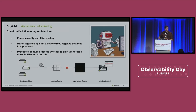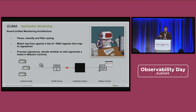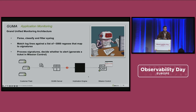On the other side, we have GUMA — the Grand Unified Monitoring Architecture. Its job is basically to parse, classify, and filter syslog. To give you an idea, this thing is matching against a list of around 3,000 regexes on every log line which comes in, and then it will decide whether it needs to forward that centrally. Once it gets central, it enters the implication engine. The implication engine is 20 years of business logic which decides whether or not to make a ticket in mission control. It's a black box, really.